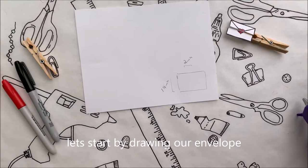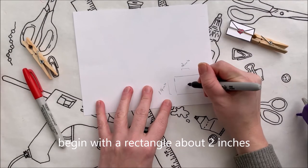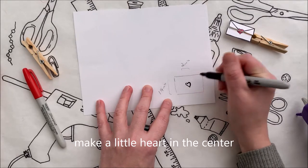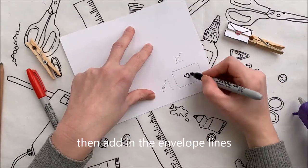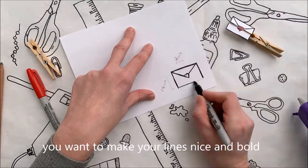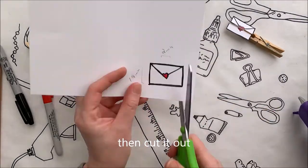Let's start by drawing our envelope. Begin with a rectangle about two inches by an inch and a quarter. Make a little heart in the center, then add in the envelope lines. You want to make your lines nice and bold. Then cut it out.